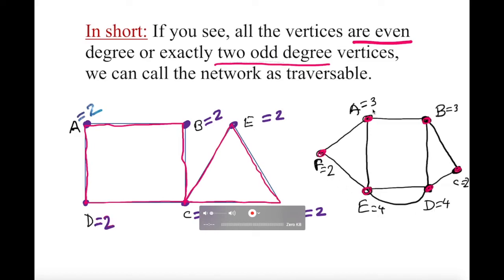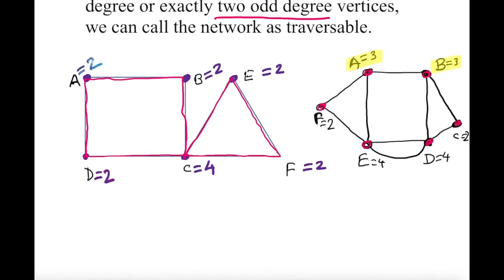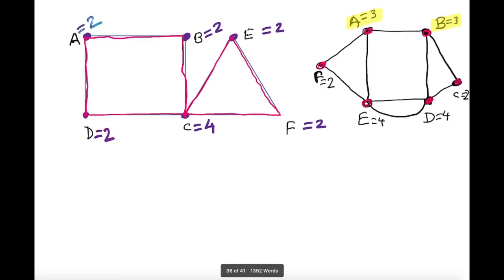Counting the odds: exactly two odd-degree vertices. So by definition, this will be a traversable network. The question is just how to trace it — we can use trial and error, but there's a quicker way.